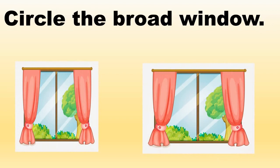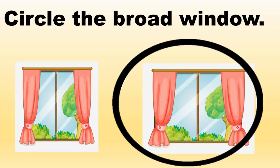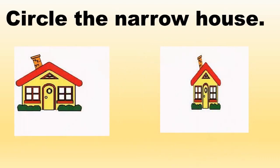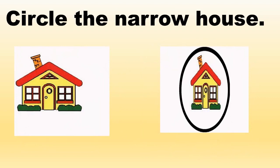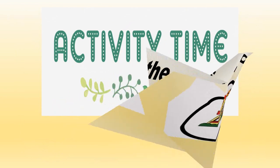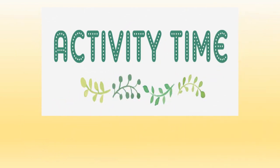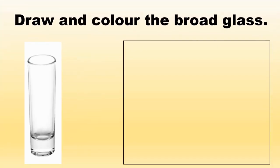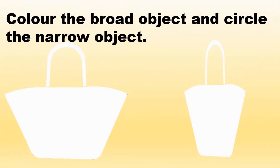Circle the broad window. Yes, very good. Now it's activity time. Draw and color the broad glass — the narrow glass is given, so you have to draw and color the broad glass. Color the broad object and circle the narrow object.